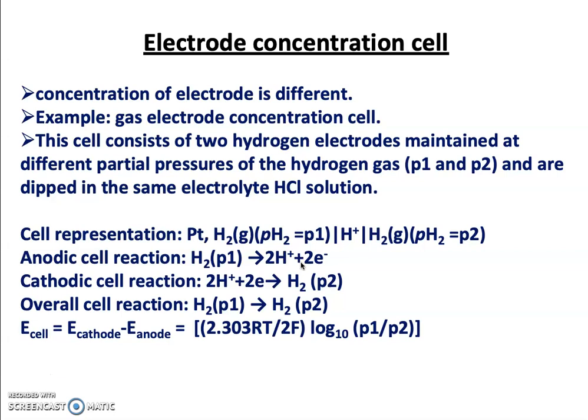Electrode concentration cells may be gas electrodes operating at different pressures or amalgam electrodes with different concentrations — for example, hydrogen electrodes at different pressures or two mercury electrodes at different concentrations. Here we take the example of a gas electrode concentration cell consisting of two hydrogen electrodes maintained at different partial pressures. The anode has partial pressure P1 and the cathode has partial pressure P2, and both are dipped in the same HCl electrolyte solution.